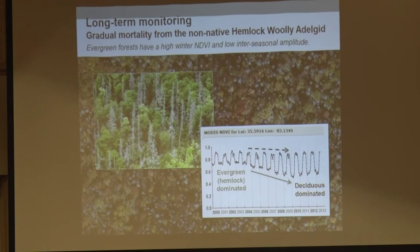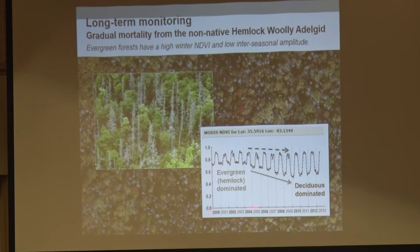Here's something many of you are familiar with — the hemlock woolly adelgid. Because hemlocks are in mixed forest types, affecting the hemlocks but not the deciduous trees, we can look at differences in the NDVI signal in winter compared to summer. Going across the eastern US, we've found places where we see this distinctive pattern — a drop in NDVI in the winter from 2000 to 2013. The deciduous trees continue to be productive in summer, but the evergreen component is declining in winter. So we can pick this up and interpret what we're seeing.